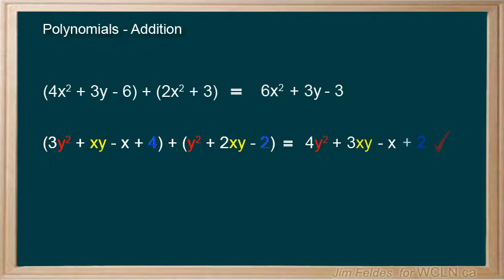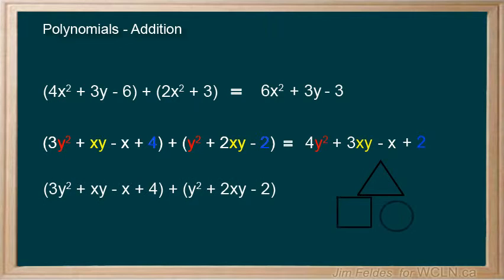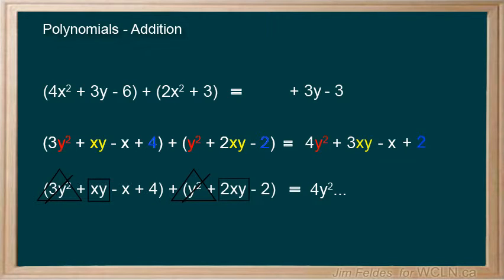Our constants combine to be 2, and we are done. In the example we just did, you could use shapes to help you sort like items as well. Find something that works for you. Here's an example of how it might look. You can also put lines through terms that you've combined to show that you have identified and included them in your answer.